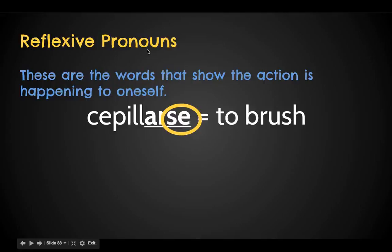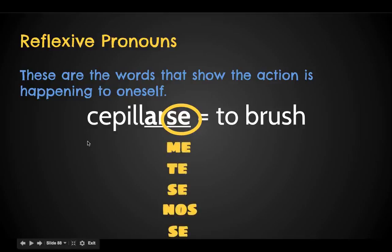A reflexive pronoun — that's what the 'se' is called on the end. It's just a small word that shows that the action is happening to the person's self. So if we put these in sentences, the reflexive pronoun is going to change based on the person talking. So if I am brushing my own teeth,